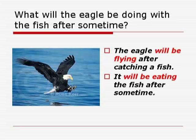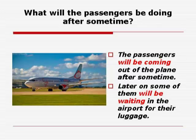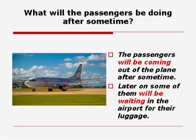What will the eagle be doing with the fish after some time? The eagle will be flying after catching a fish, and it will be eating the fish after some time. What will the teacher be doing after 10 minutes? The teacher will be teaching the next topic after 10 minutes. She will not be giving punishment. What will the passengers be doing after some time? The passengers will be coming out of the plane after some time. Later on, some of them will be waiting in the airport for their luggage. In this way you can use Future Continuous Tense to show an activity that will be in progress at a particular moment in the future.